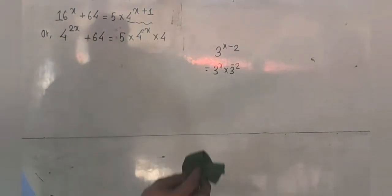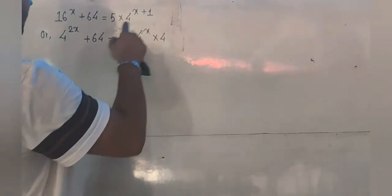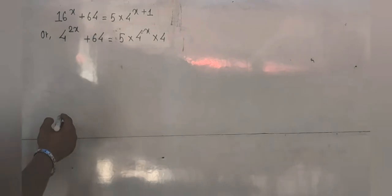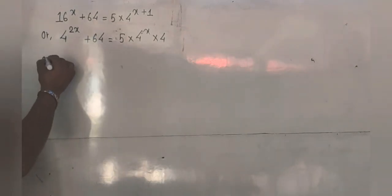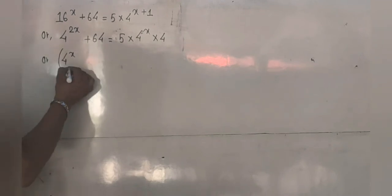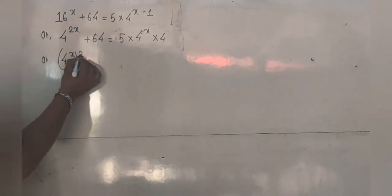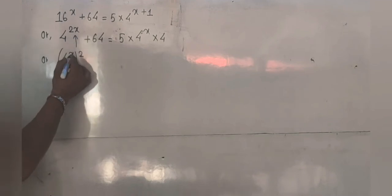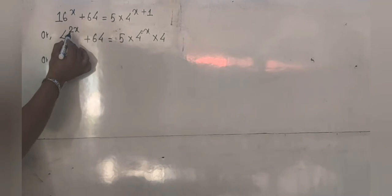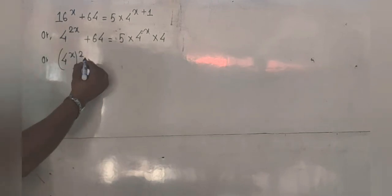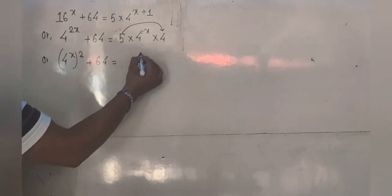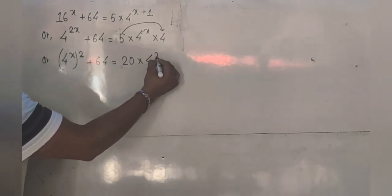This is what the rule of indices states. I think you know this rule — we have covered it in Class 8 and Class 9 as well. So we have 4 with the power 2x, which can also be written as 4 to the x, with 2 written as an exponent outside, because x into 2 gives us 2x. Here I have written 2x as x into 2, plus 64 as it is. Now, you can multiply 5 into 4: 5 into 4 is 20, into 4 with the power x.